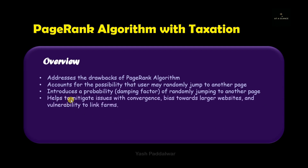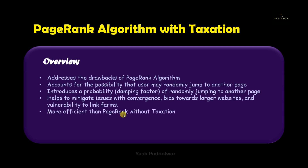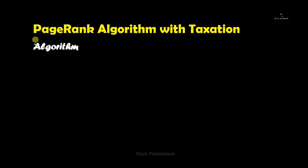Introducing this factor helps to mitigate issues with convergence. Convergence refers to dead ends that may be present inside a network of web pages — those nodes which don't point to any other node in the network. It also helps to mitigate the bias towards larger websites containing multiple web pages, and mitigates vulnerability to link farms. Overall, PageRank with taxation is more efficient than the normal PageRank algorithm we saw earlier.